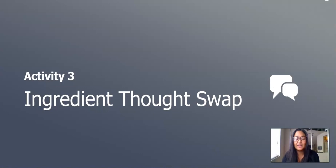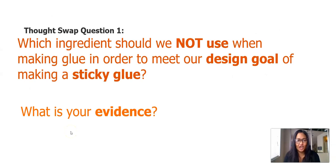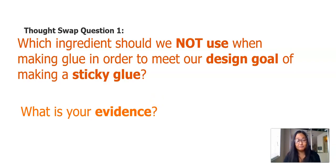In the next activity, we will do an ingredient thought swap. I'm going to ask some questions and you can jot down your answers — get a piece of paper and something to write with. Now that we know which ingredients are sticky when mixed with water, we can plan which to use to make a sticky glue mixture. We can choose just one glue ingredient mixed with water, or more than one. Here is my first question: which ingredient should we NOT use when making glue to meet our design goal of making a sticky glue? What is our evidence?